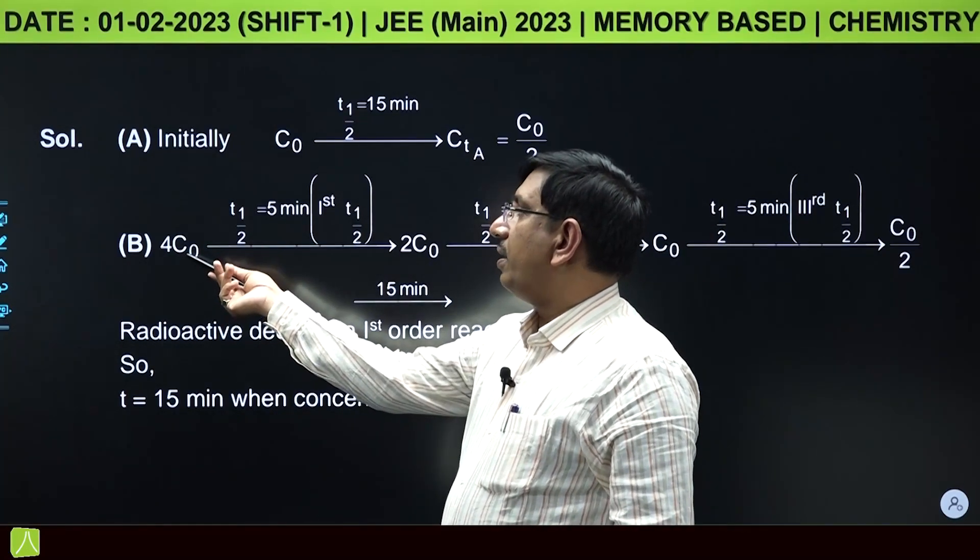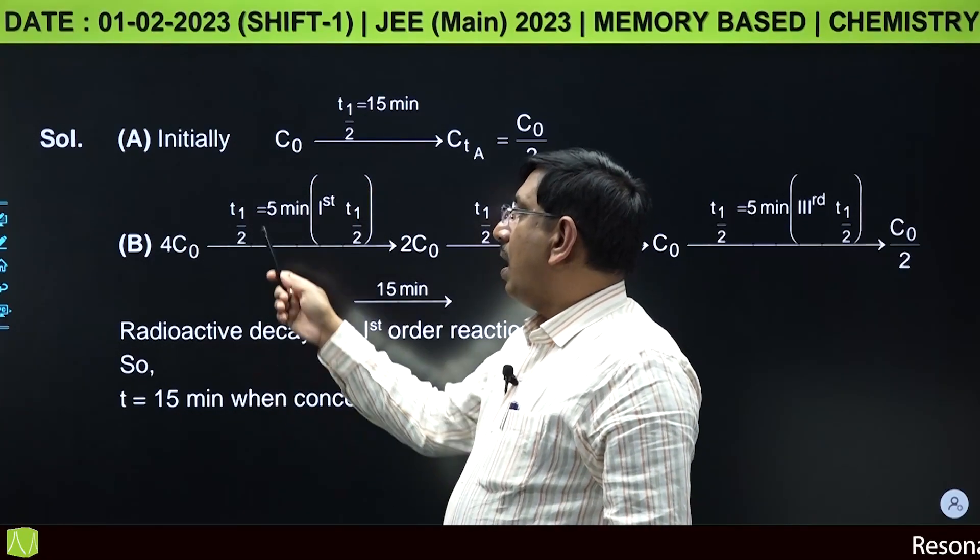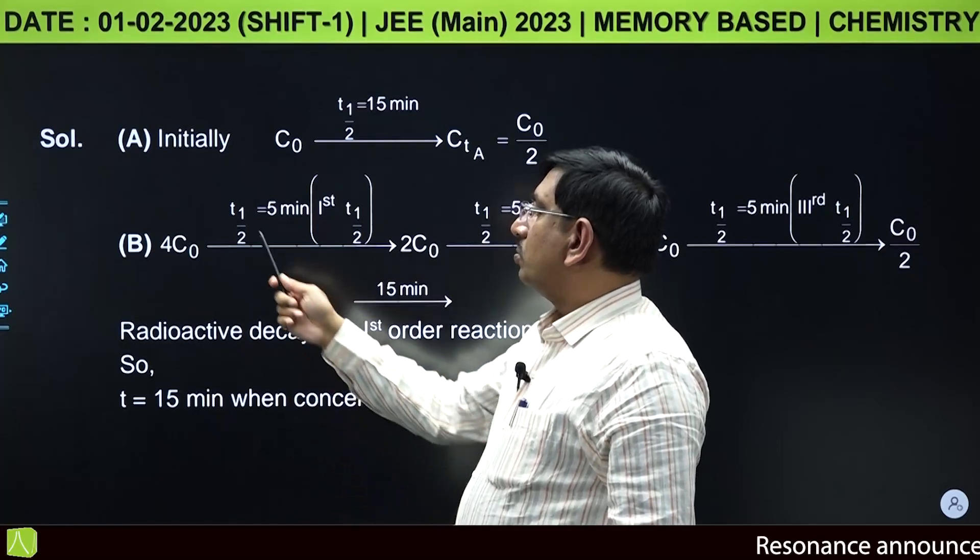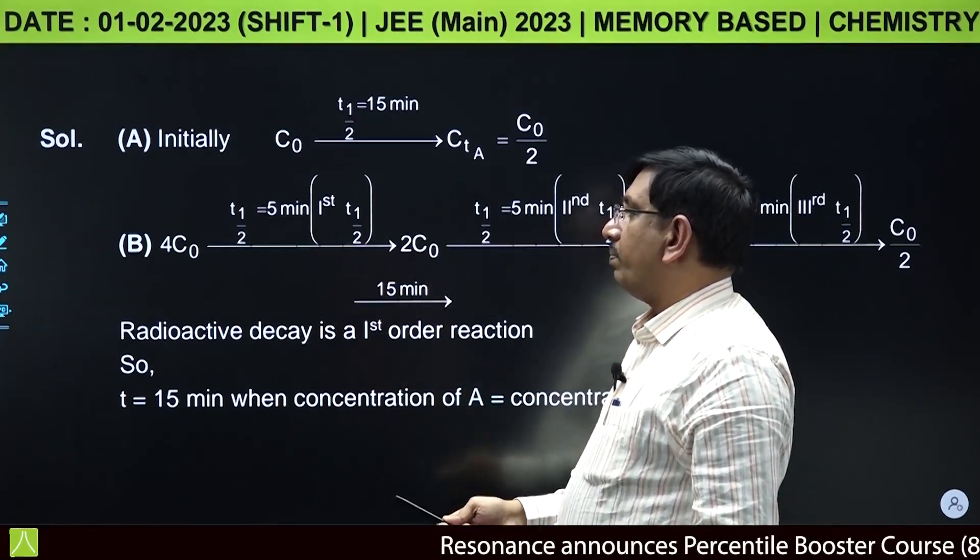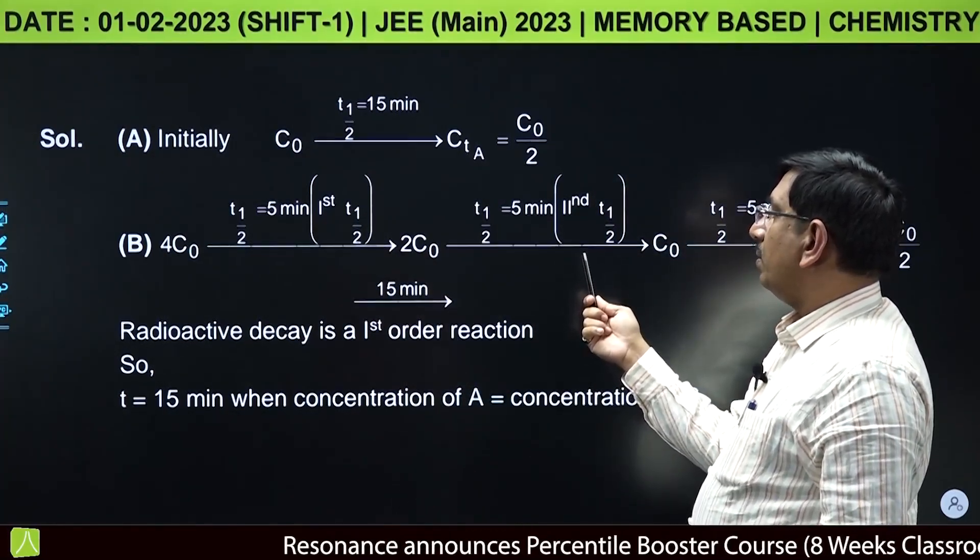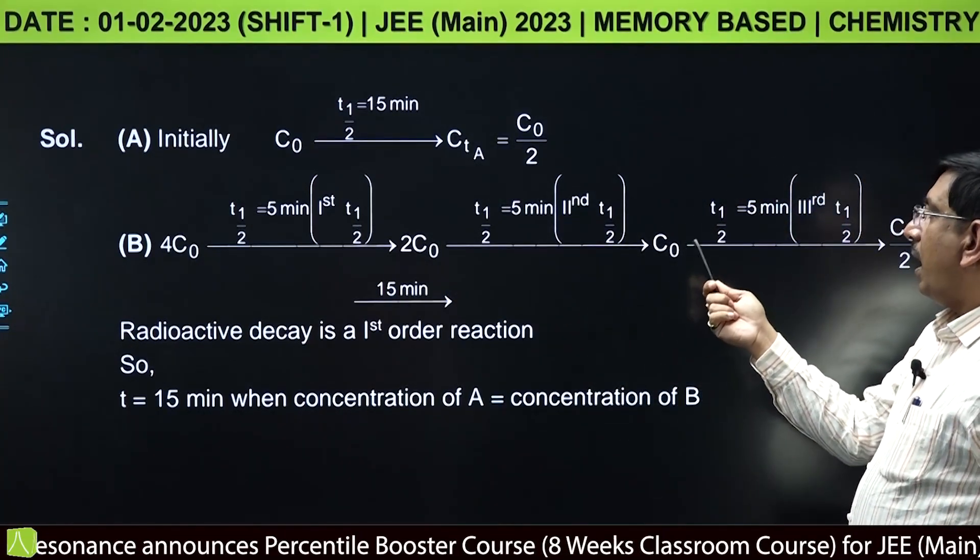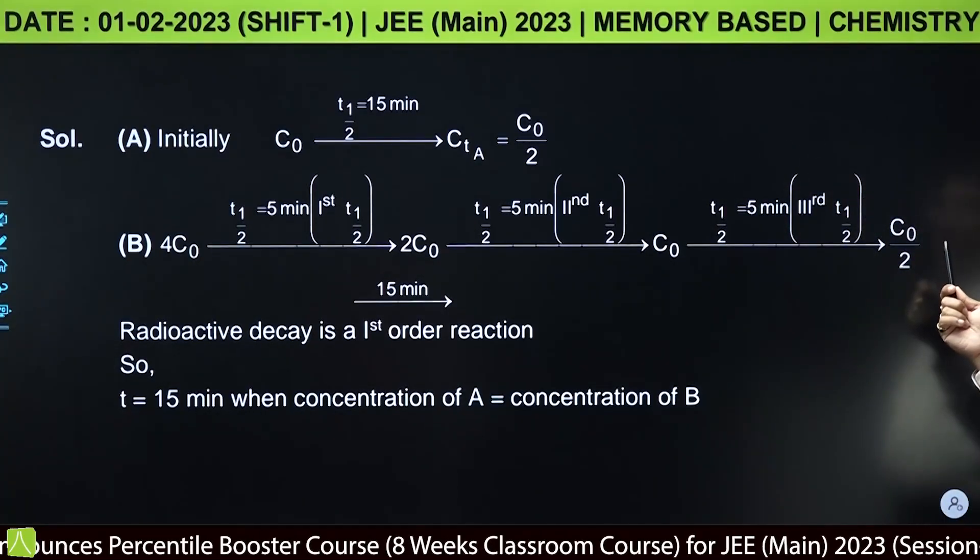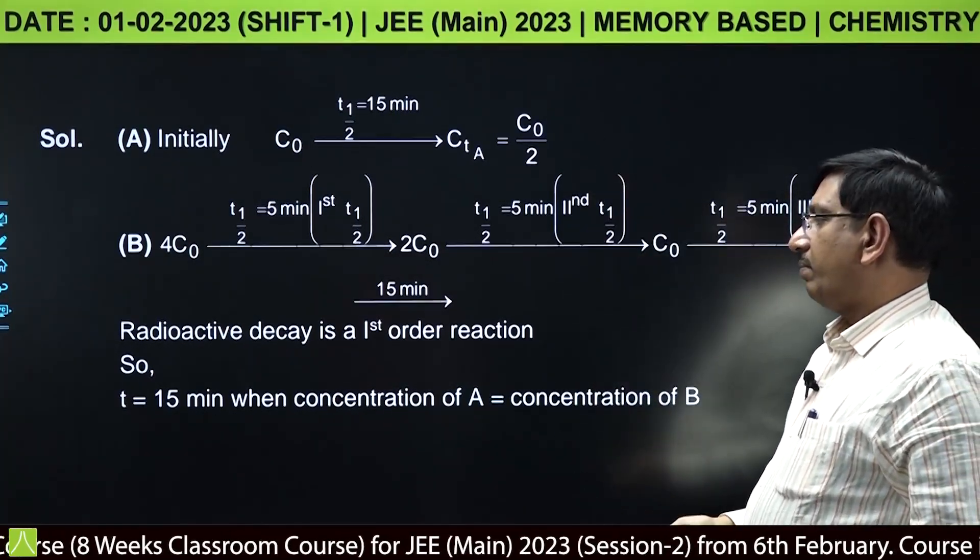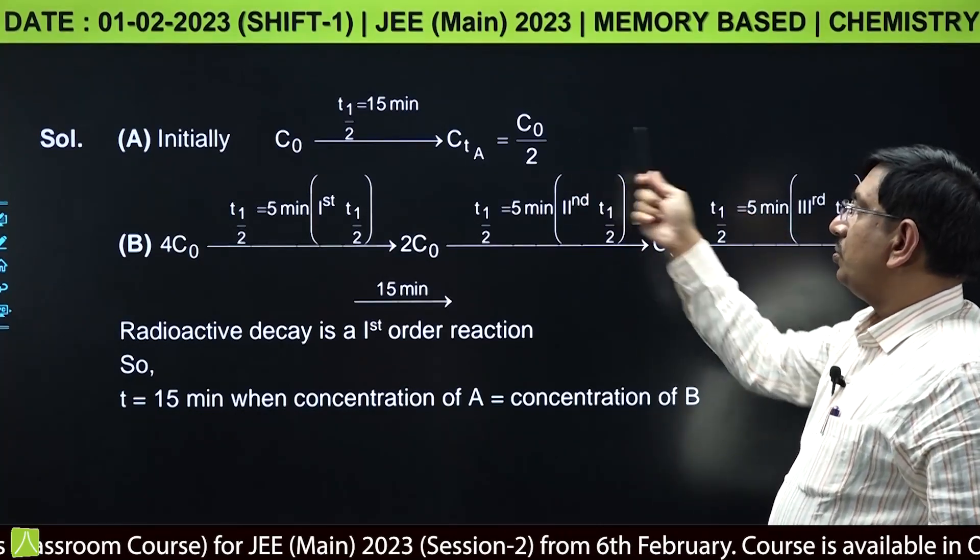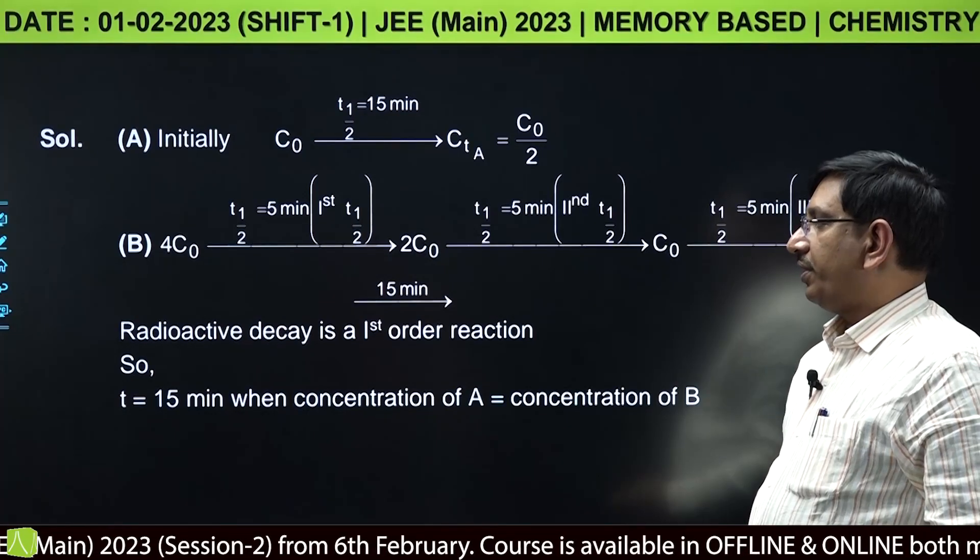Initially for A: C0 with half-life 15 minutes becomes C0/2 after 15 minutes. For B: 4C0 with half-life 5 minutes becomes 2C0 after 5 minutes, then C0 after 10 minutes, then C0/2 after 15 minutes.